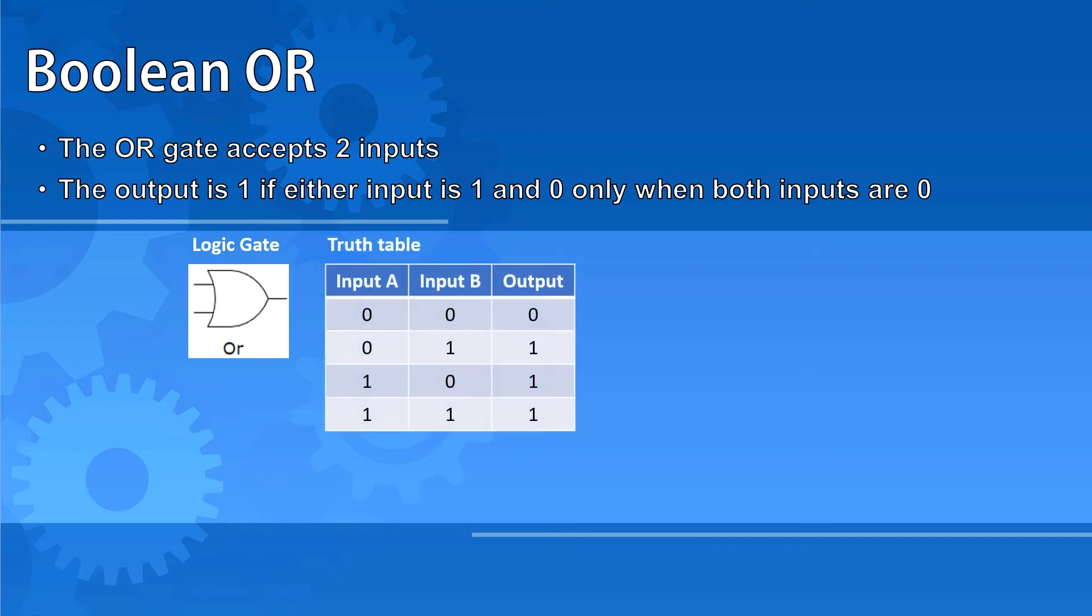Because there are two inputs again, we once again have the options of inputs of 0 and 0, 0 and 1, 1 and 0, or 1 and 1. The output in this case will be 1 unless both inputs are 0, as you can see in this truth table. The symbol to use in a Boolean expression for an OR is the plus symbol. So if input A and input B go through an OR gate, it is A plus B.